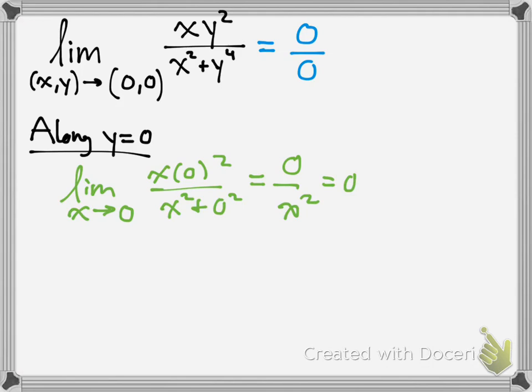So, that means we did get a limit, in fact. If you approach along the x direction, the limit is 0. If we approach along another area, say x equals y squared...